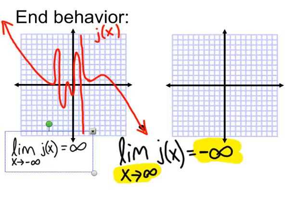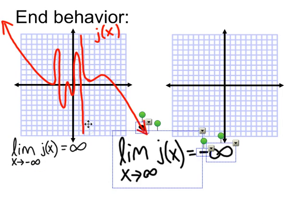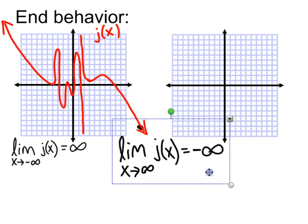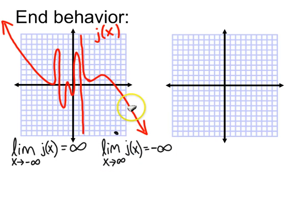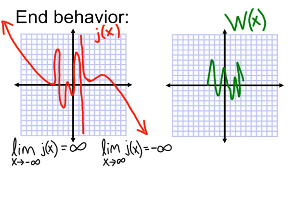Let's just see what other scenarios we might come up with when we're dealing with end behavior. So let's say we're dealing with a different function now — let's say we're dealing with a function capital W of x. And let's say that W of x, we don't really care what it's doing in the middle, but let's say as it goes to the left, it just levels out like this. Hopefully a vocabulary word is popping in your mind — hopefully you're thinking, oh, you mean like a horizontal asymptote? Well, yeah, that's exactly what I mean.